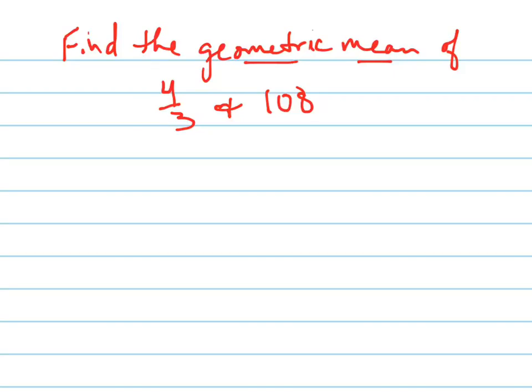Alright, find the geometric mean of 4 thirds and 108. Geometric mean, this means that I'm going to find the number x such that x is a proportion between 4 thirds and 108.